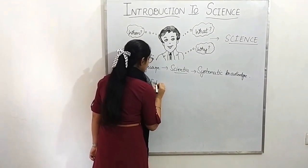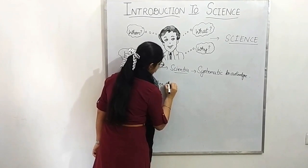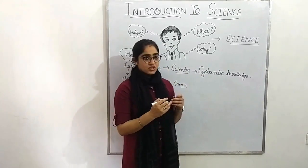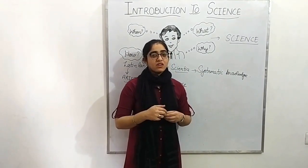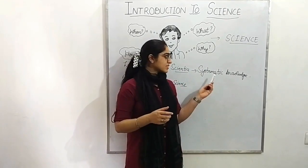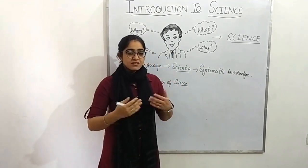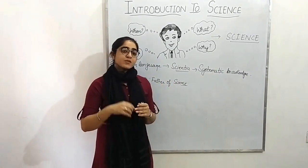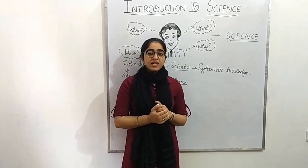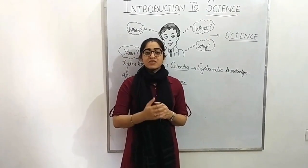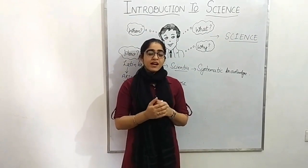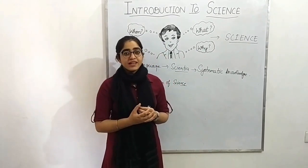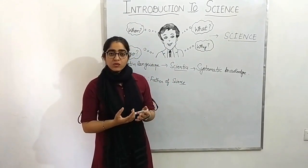Now students, I am talking about systematic knowledge. Let me give you one simple example. Suppose you want to make lemon juice — what will you need? First of all, you will look at what ingredients are needed to prepare lemon juice. Ingredients means whatever material is required.